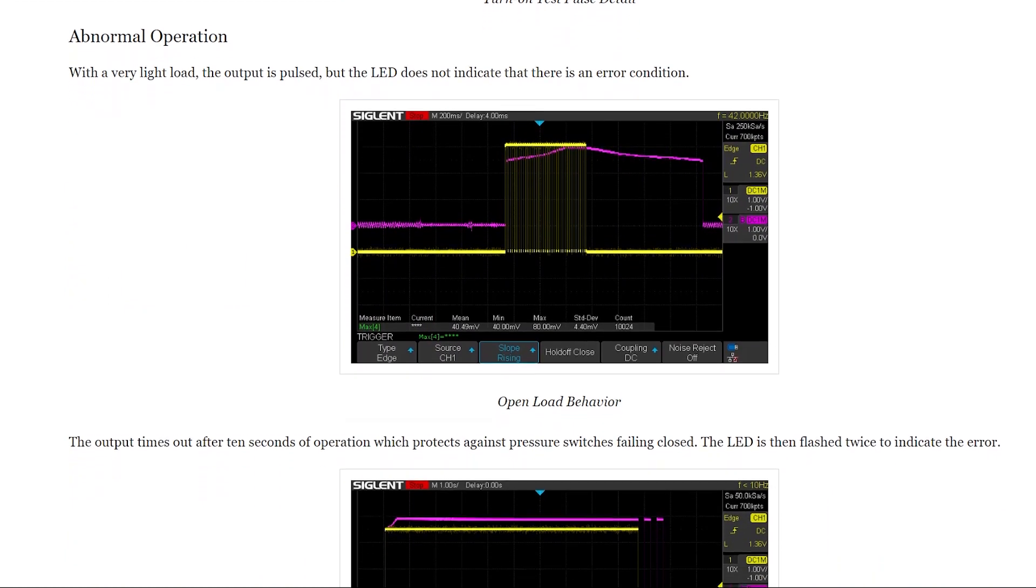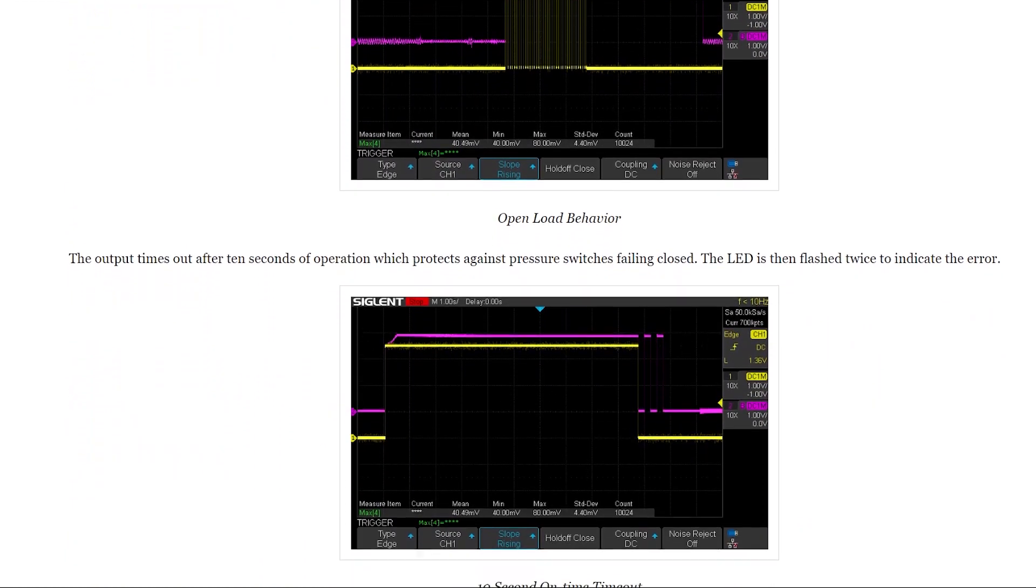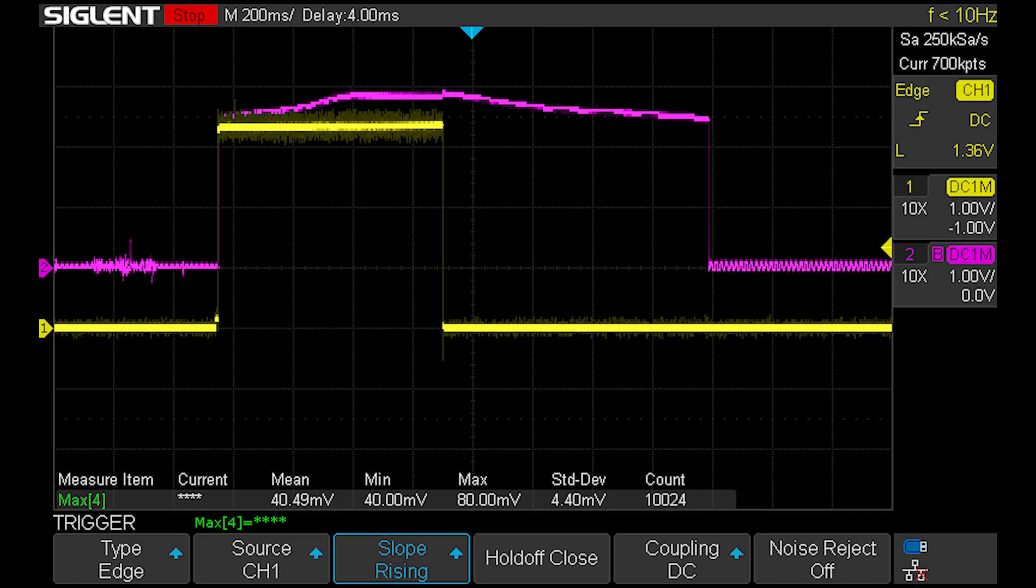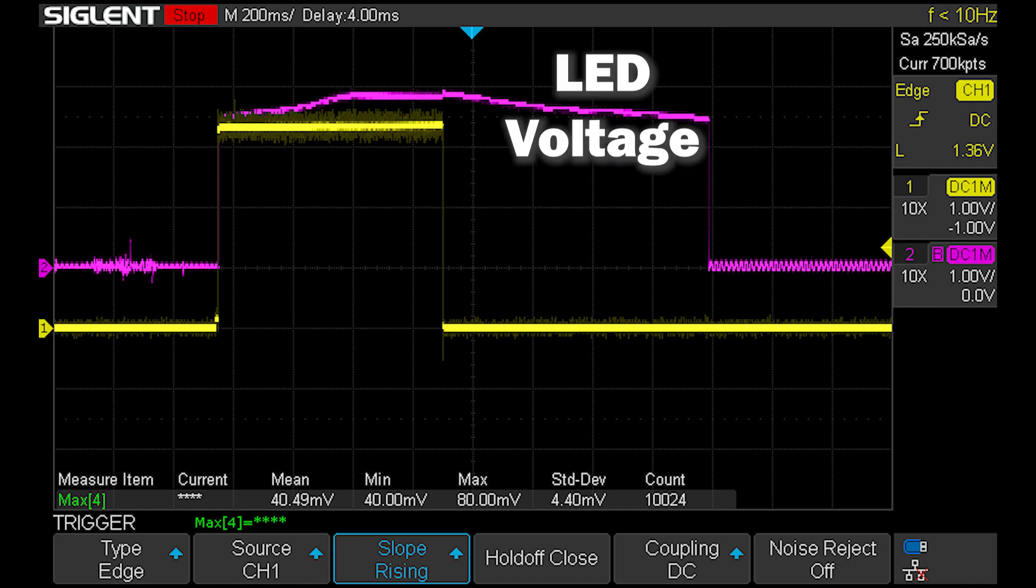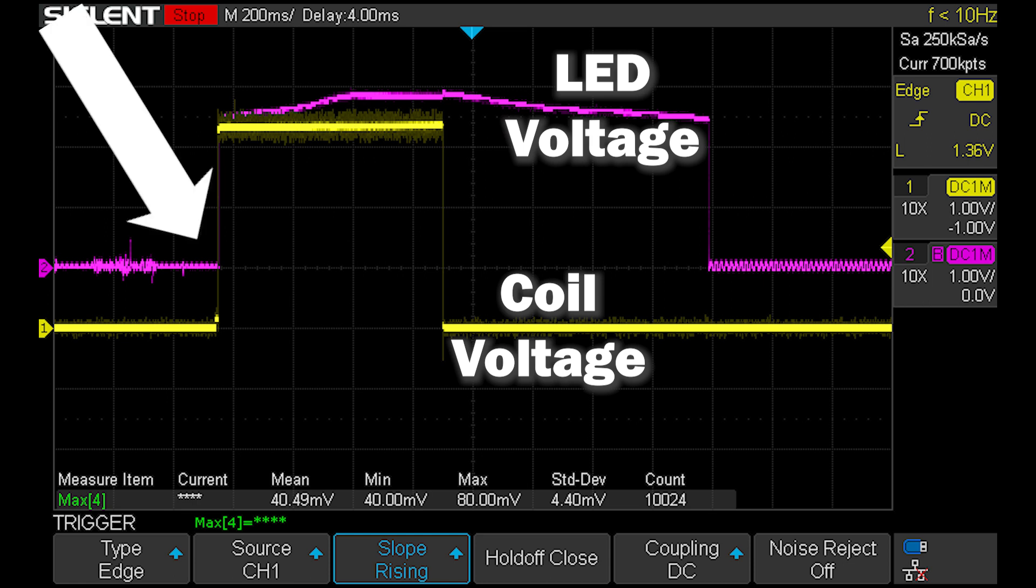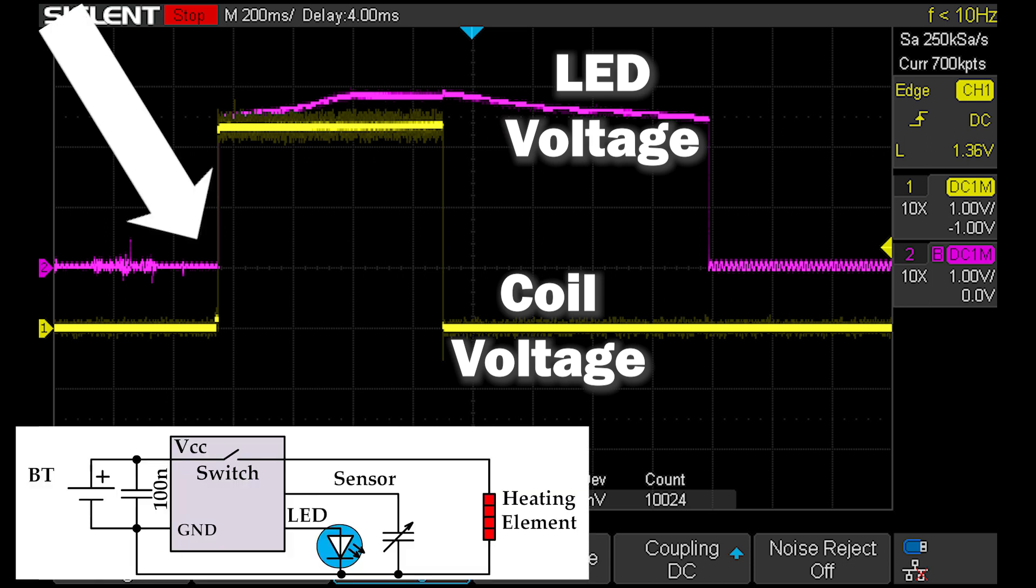However, if you want, you can follow the link in the description in order to read it fully. So at this diagram you can see LED voltage, which is purple, and coil voltage, which is yellow. So at some moment when the inhaling starts, the coil must be heated. A switch inside the IC opens, providing a pass for current, and the LED indicates that the device works.